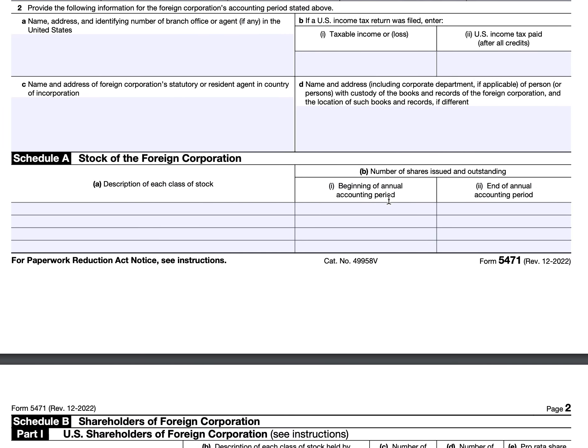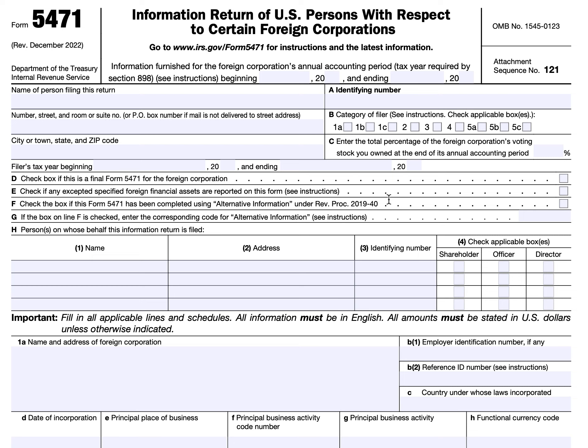We'll go through the entirety of this tax form, but there is no category of filer required to complete every single item. Category 4 filers have the most reporting requirements, but they do not need to complete Schedule O, for example. There are also separate schedules not attached to this form — such as Schedule G1, Schedule H, and Schedule P. I'll go through the schedules attached to this form, and we may produce videos about the separate schedules at a later date depending on audience input.